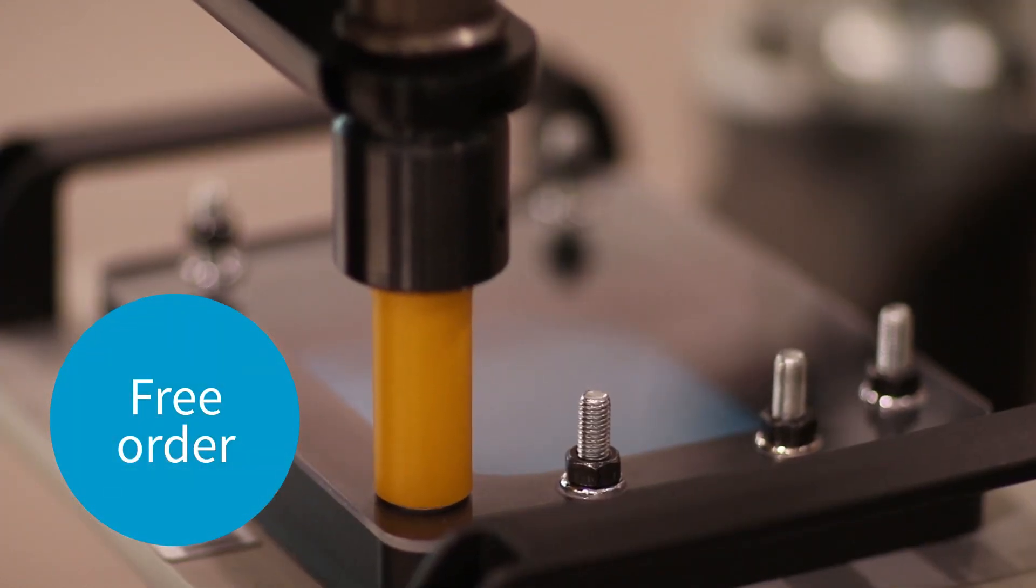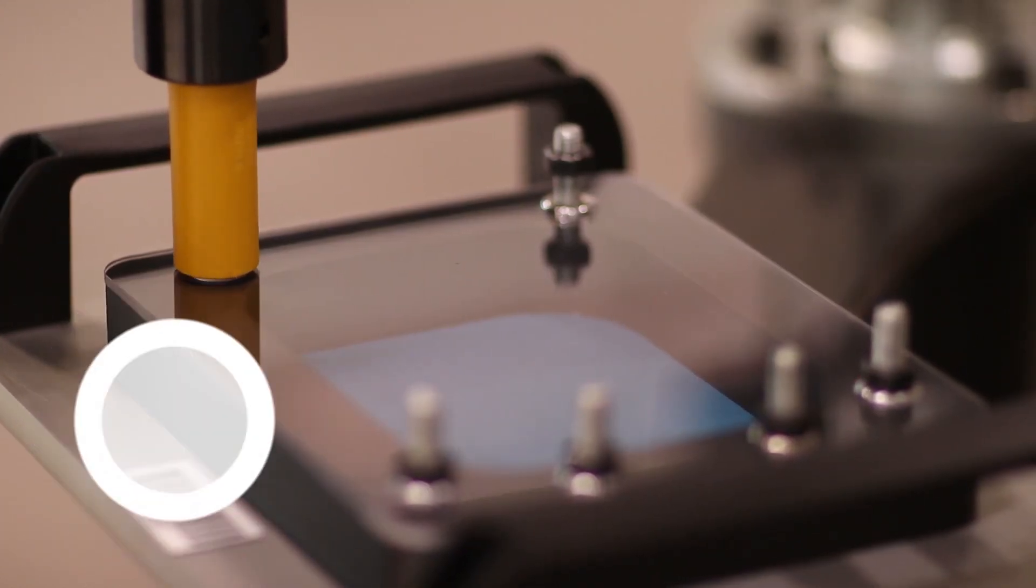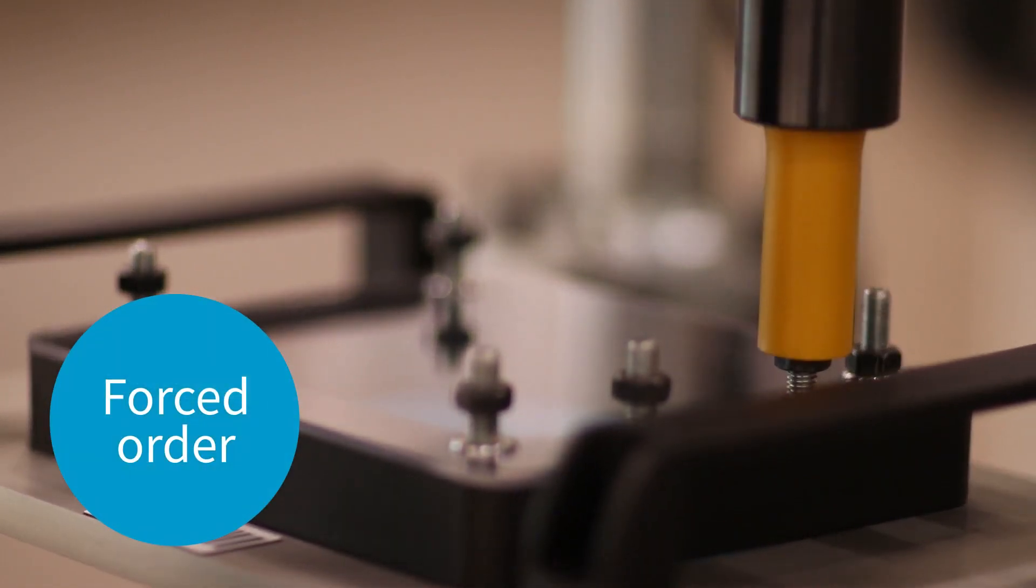Free order allows fasteners to be assembled in any sequence, whereas forced order requires a specific sequence to be followed.